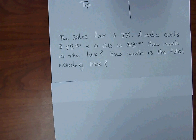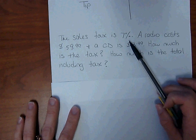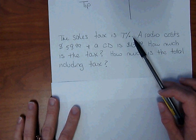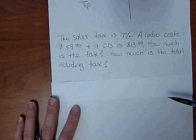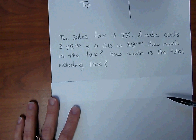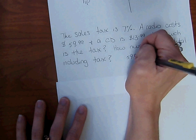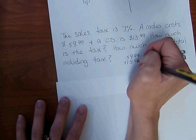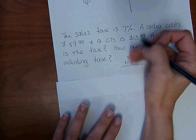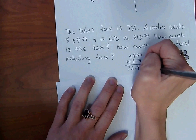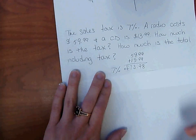So let's start. We are paying tax — tax is something extra that we're going to have to pay, and it's 7%. When you go to the store and get your receipt, you see an itemized list, and at the bottom it'll say subtotal. They're taking the tax on that subtotal, so we need to add the cost of our two items together: $59.99 and $13.99, which gives us $73.98.